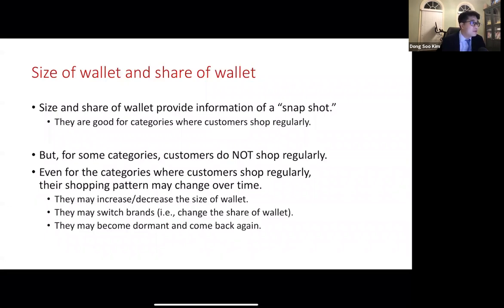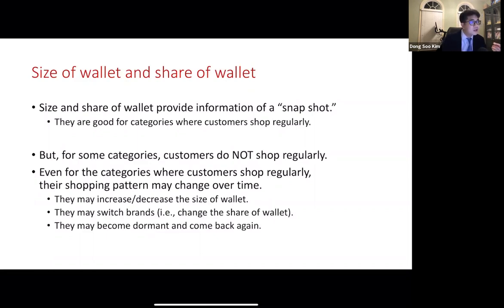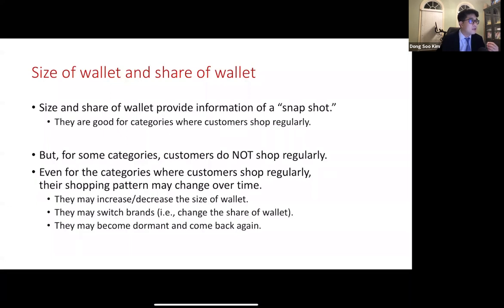However, size and share of wallet reflect transactions at a specific time or during a short time period, like a snapshot photo of a boy running continually. If a customer shops regularly and shows a clear pattern, these metrics are still useful. If the boy is running constantly in one direction, the snapshots are very similar to each other, and one snapshot is enough to understand his movement. Similarly, if a customer's shopping pattern is constant over time, just one observation is enough to understand it.